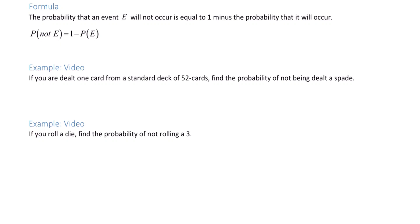The probability that an event E will not occur is equal to 1 minus the probability that it will occur. For example, if you are dealt one card from a standard deck of 52 cards, find the probability of not being dealt a spade.